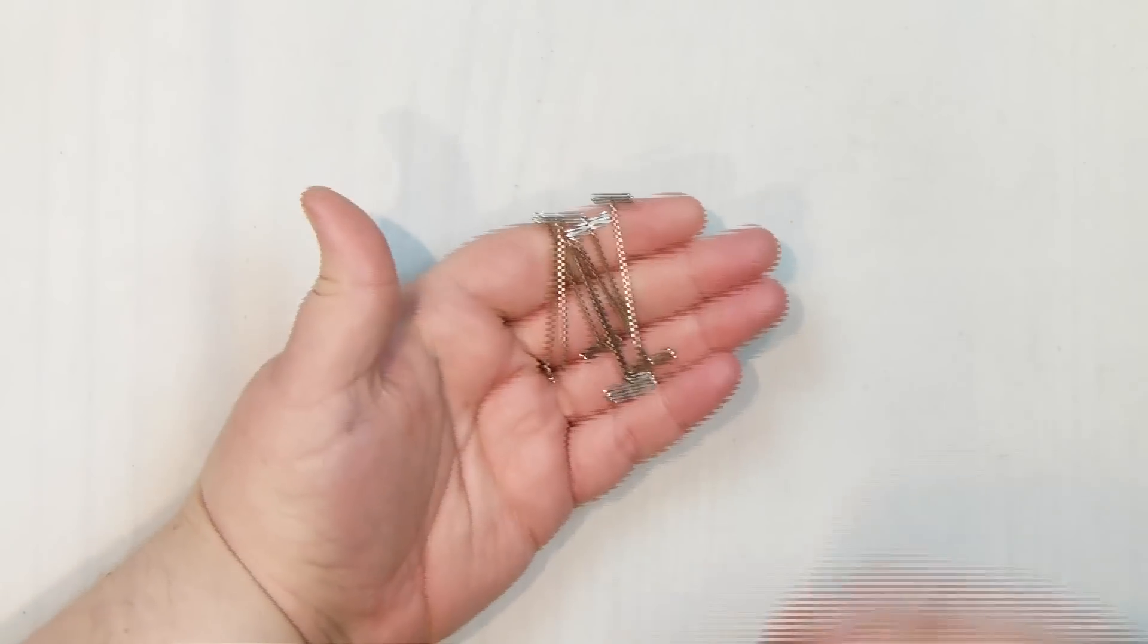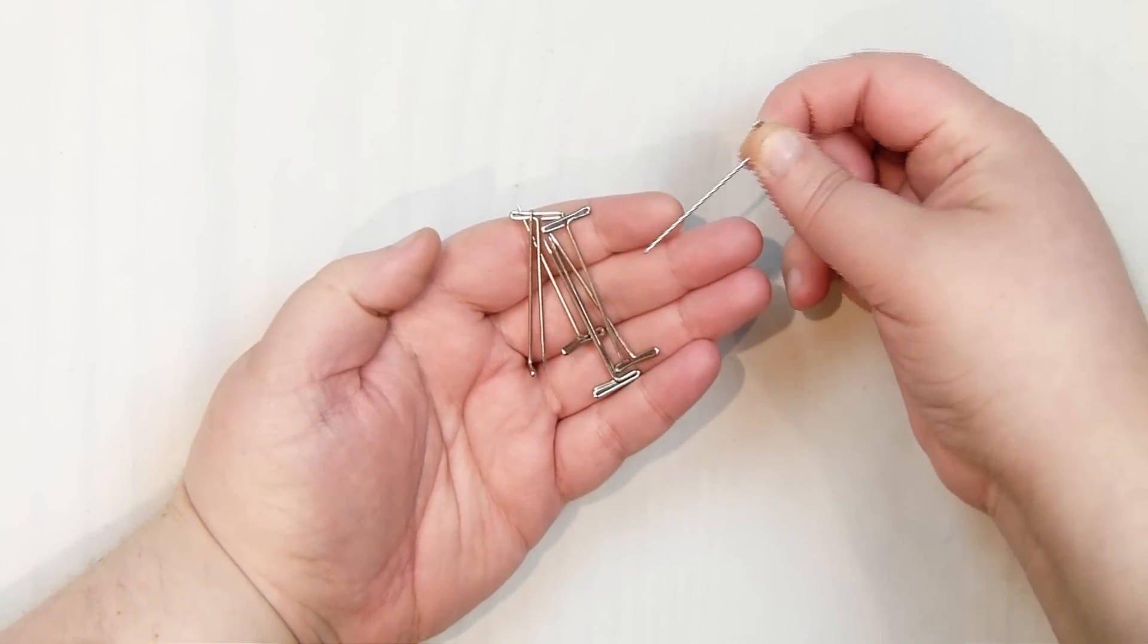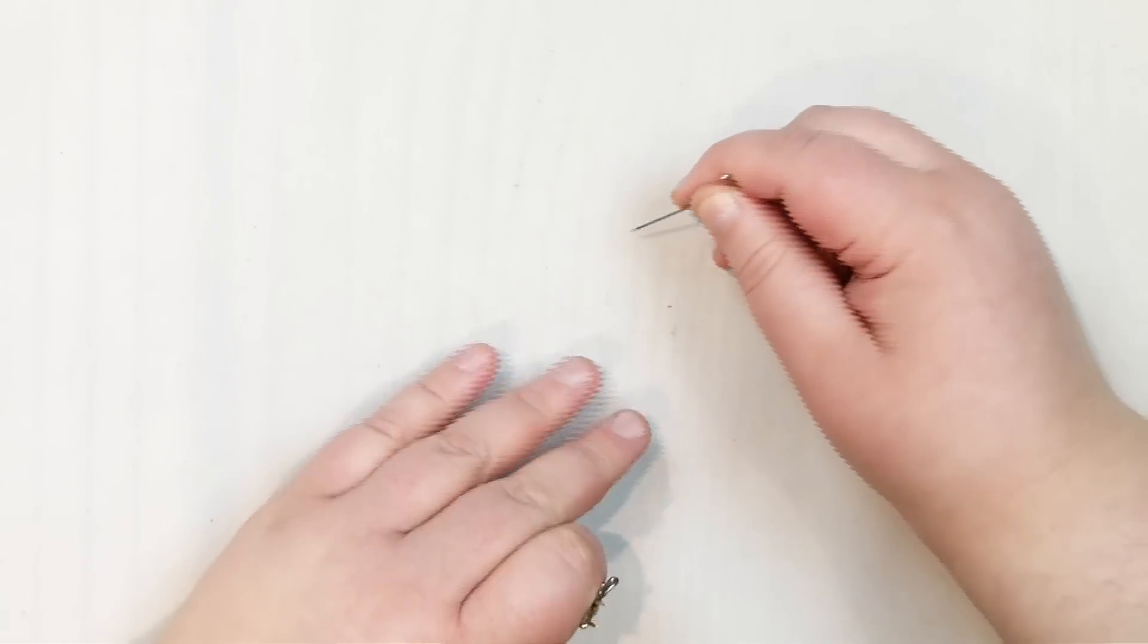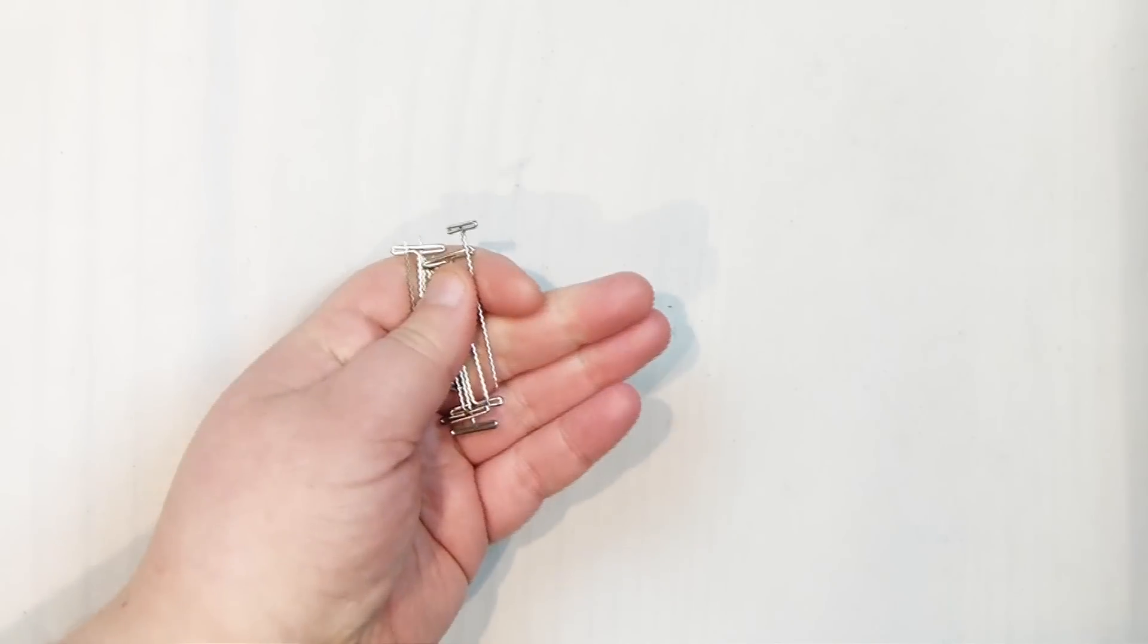But also to help undo the knots, I sometimes use the T-pins themselves as well. So like I said, having the tweezers can help sometimes, but I also just use the pins themselves. So just, you have that very fine tip and you just get it in there and kind of try and loosen up the knot. So that's what they are good for as well.